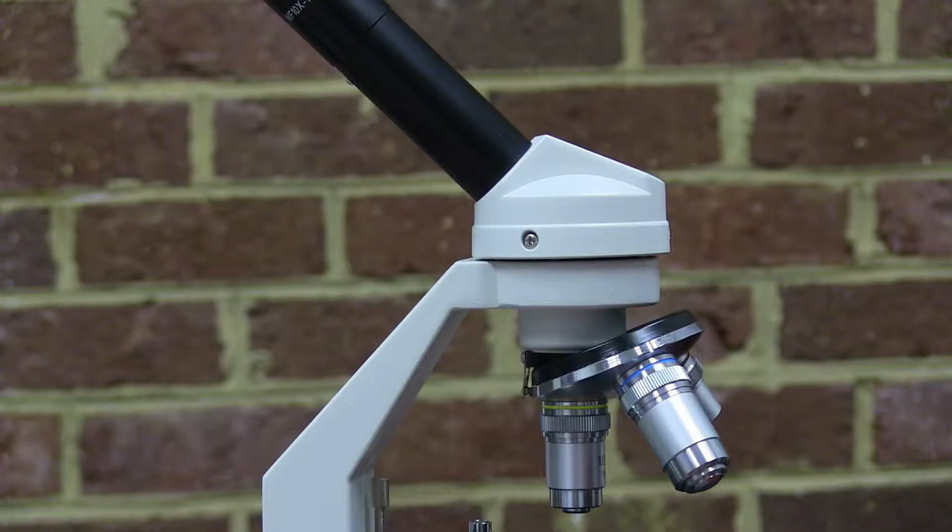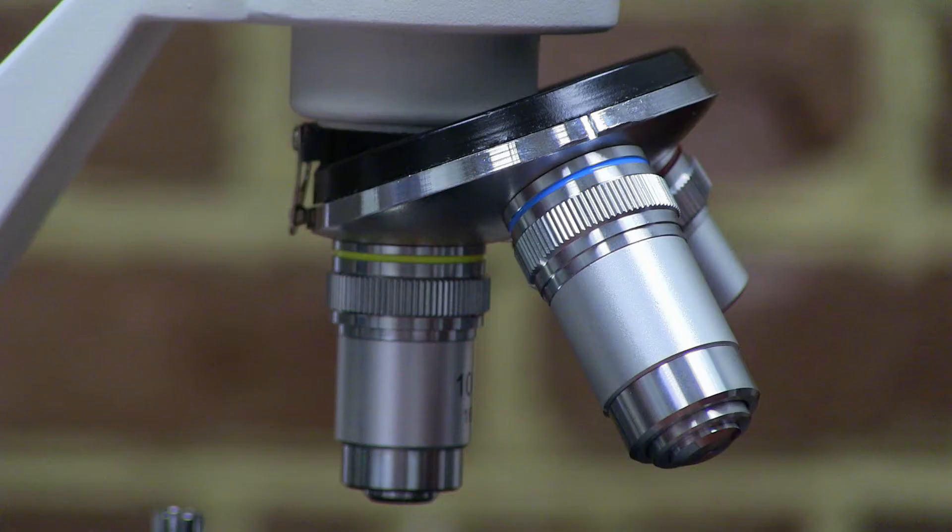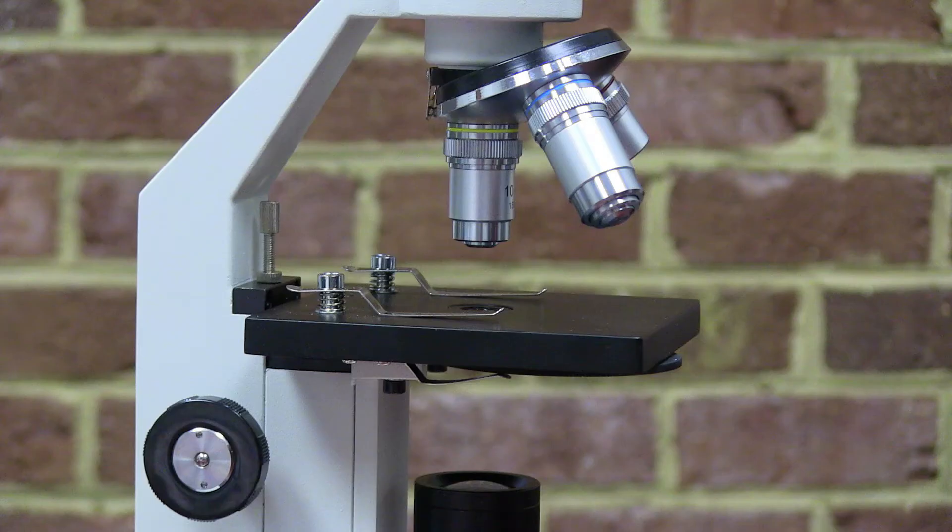Attached to the head is the nose piece, which holds at least one objective lens. Below the objective lens or lenses is the stage, which is where the slide will rest.